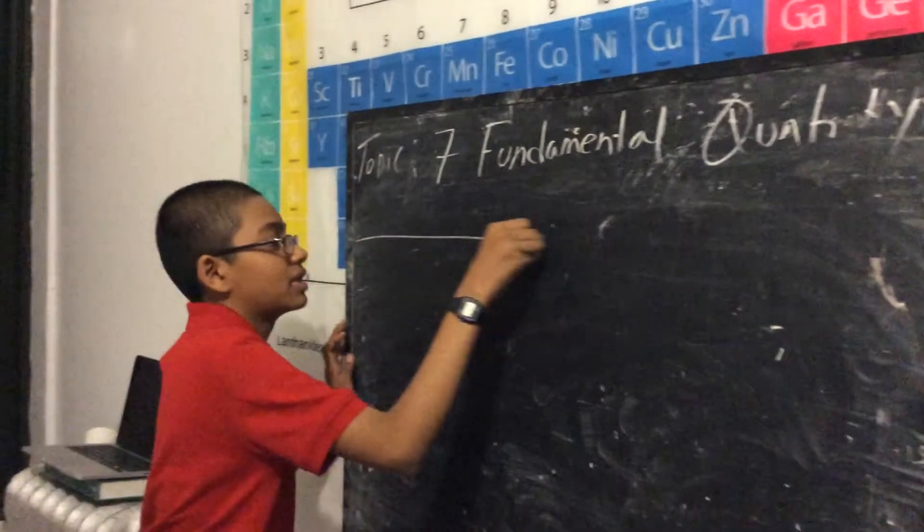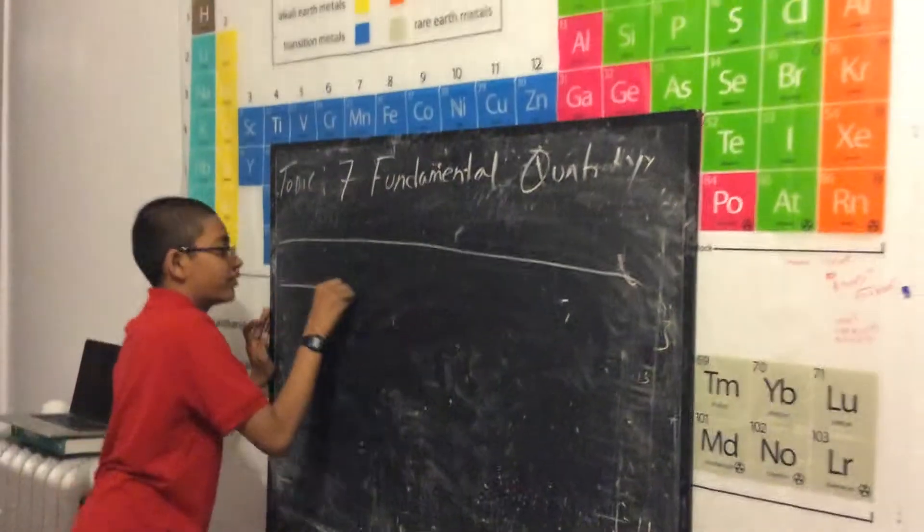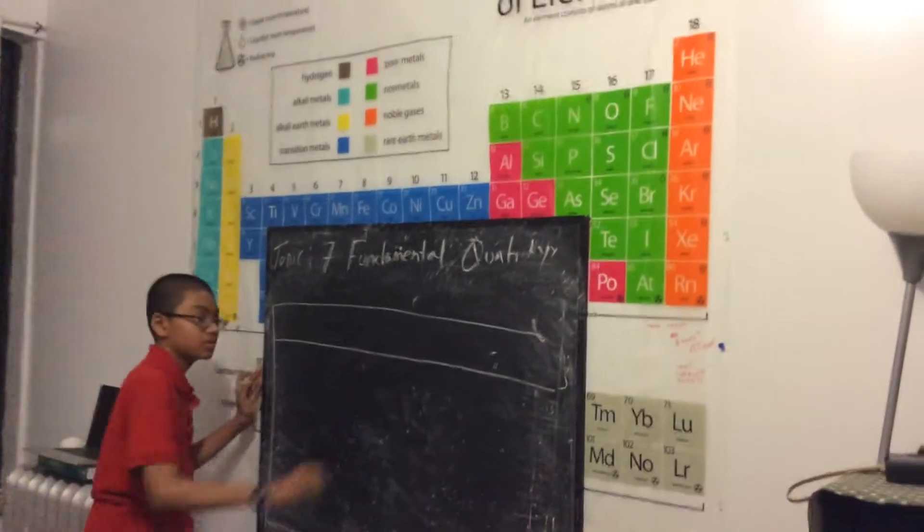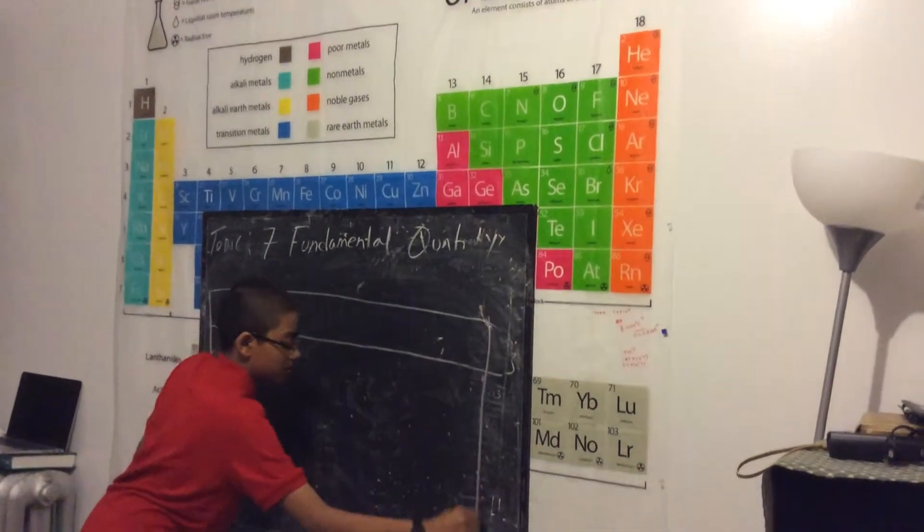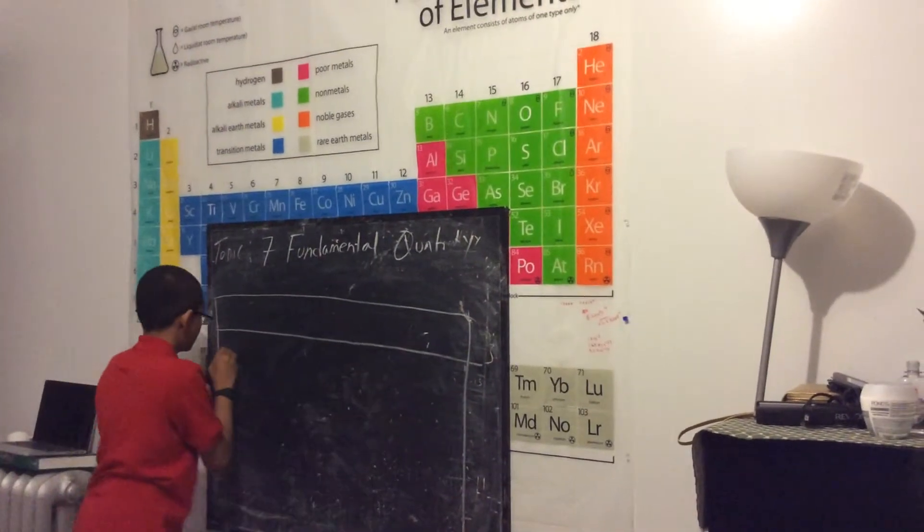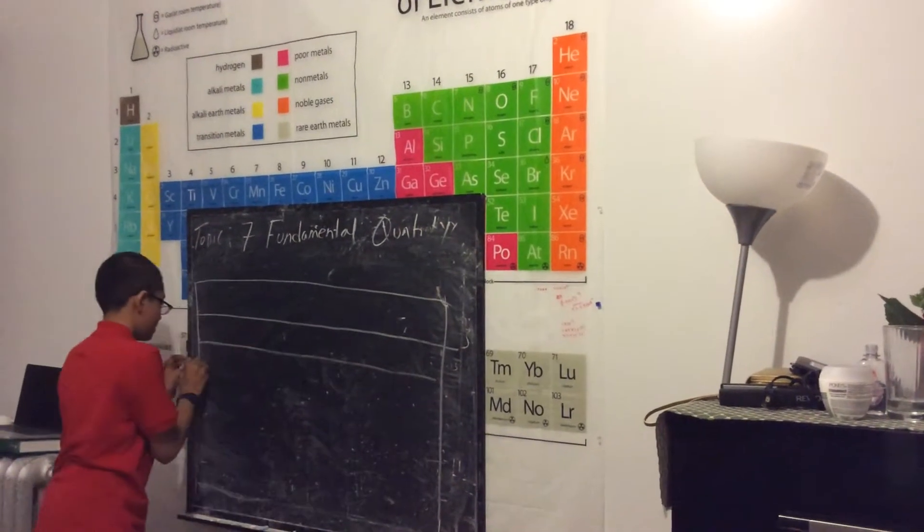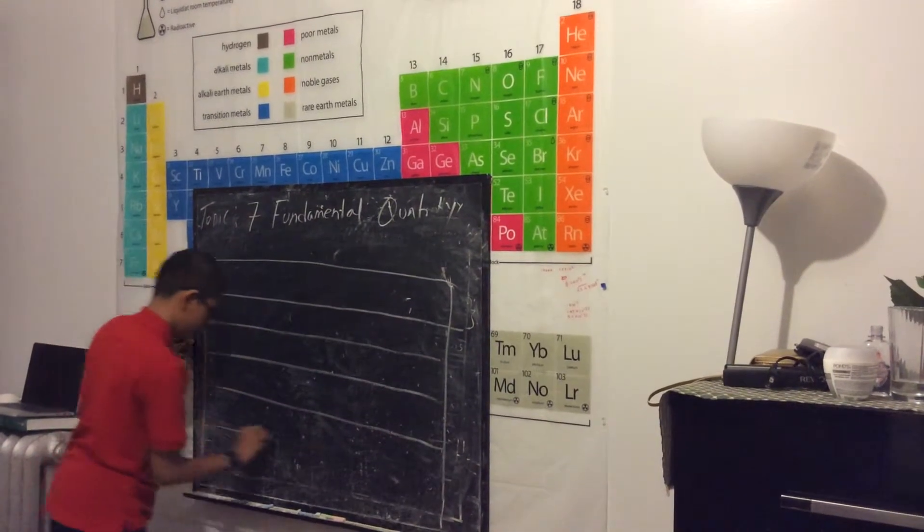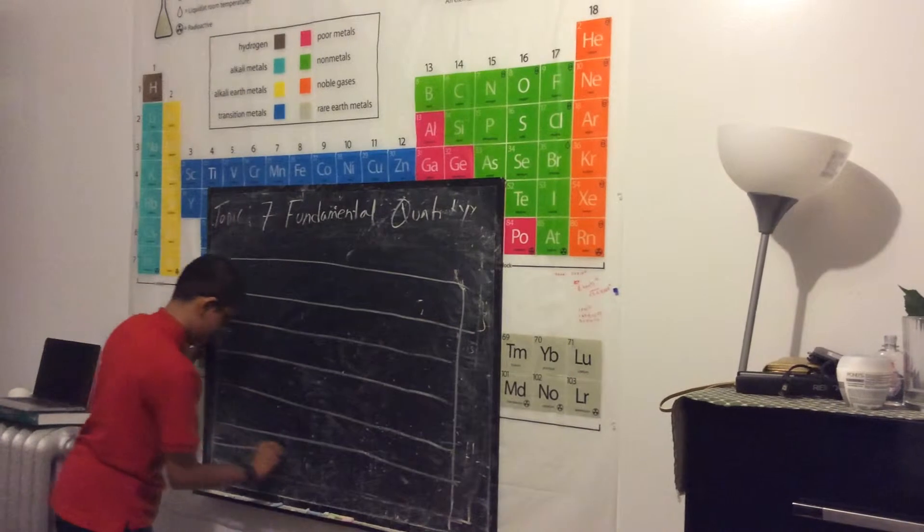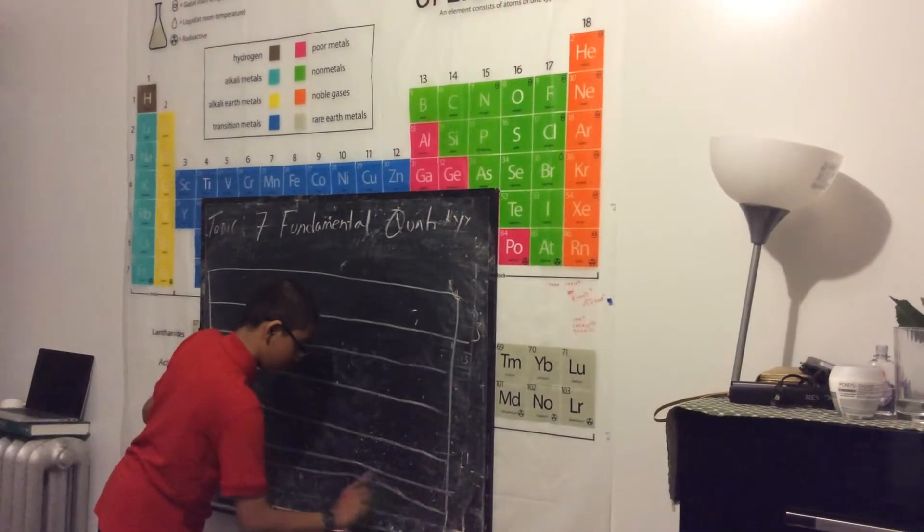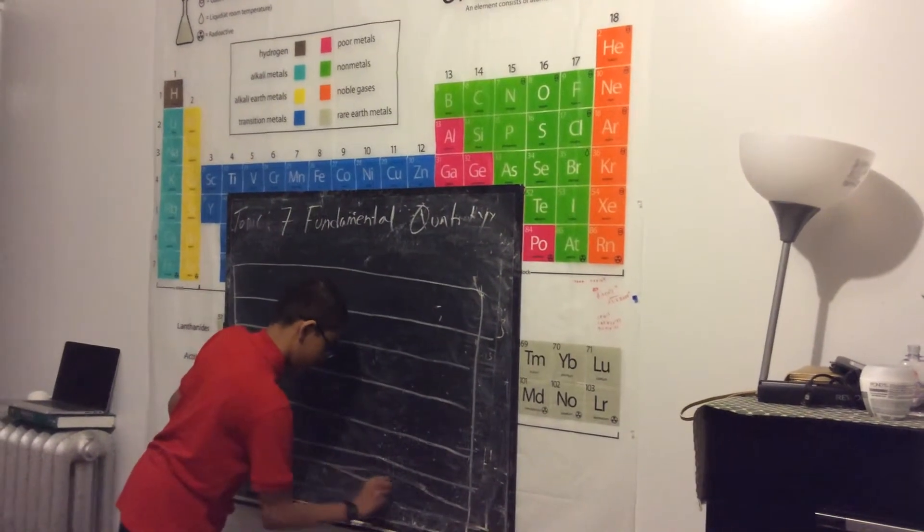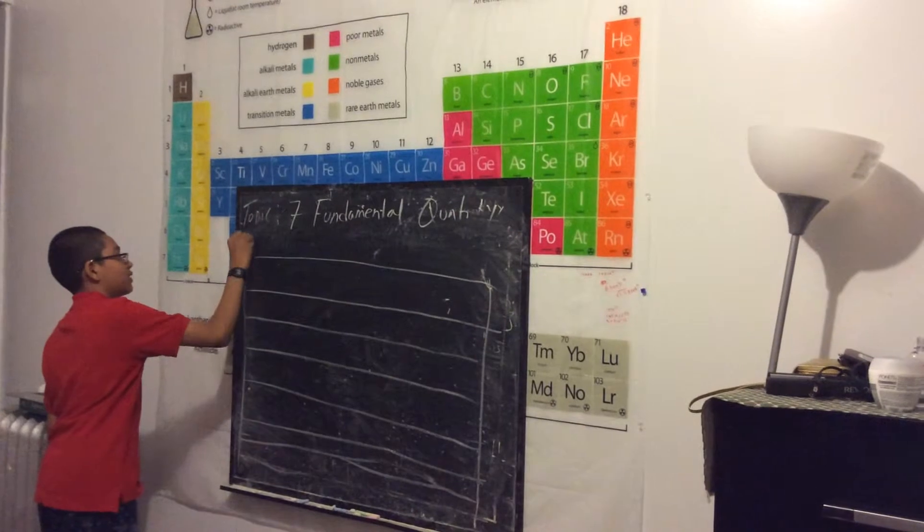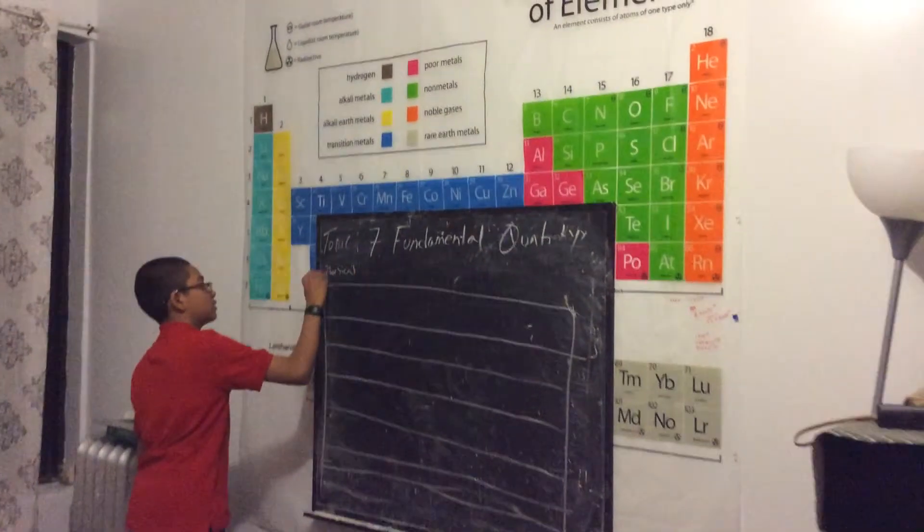So right now I'm going to make a table with seven rows, each for the different types of the units. There's one row, there's two, there's three, four, five, and there's seven units. So let's first start off writing the physical units.